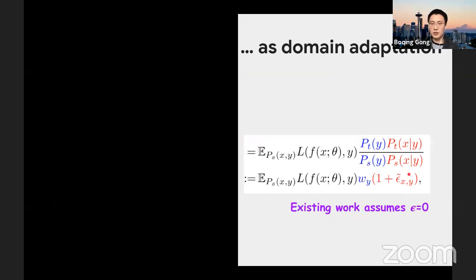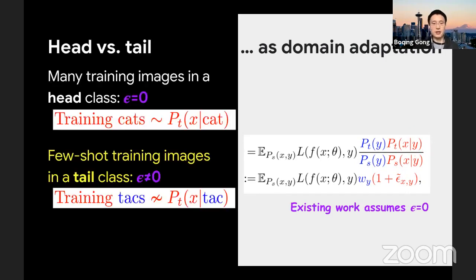In other words, let me show this figure. Maybe it's more clear. In other words, they're assuming that the two conditional distributions between the source and the target actually are the same. I don't think that's the case. Let's try to study these two distributions a little bit more carefully.